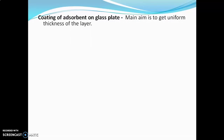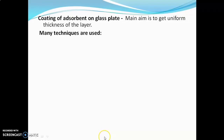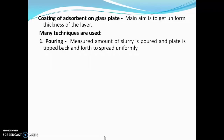Now, coating of adsorbent on the glass plate. The main aim of this step is to get a uniform thickness of layer. Many techniques are used for coating the adsorbent on the glass plate. Before going for these techniques, one should prepare the slurry of adsorbent in a suitable solvent. Solvents should be volatile in nature because the plates are dried. The first method of coating is the pouring method, where a major amount of slurry is poured on the plate and the plate is dipped back and forth to spread the slurry uniformly.